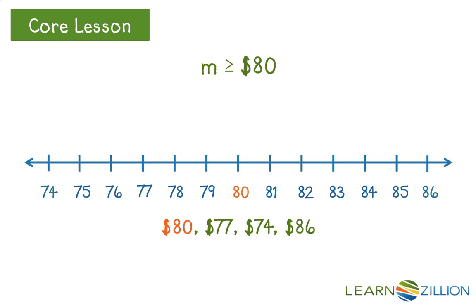Using a number line, I will compare whether the possible solutions are equal to or greater than $80. I want to make sure that the solutions land right on 80 or are to the right on my number line, because all numbers to the right have a greater value than $80. If they land on the left side of 80, they have a lesser value and would not make my inequality true.